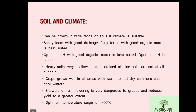Grape can be grown in a wide range of soils. It is a tropical crop requiring sandy loam soil with good drainage. The optimum pH for grape cultivation is 6.5 to 7.5. Heavy soil, very shallow soil, and ill-drained alkaline soils are not suitable for grape cultivation.